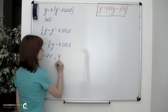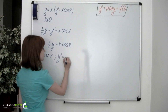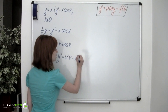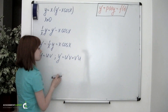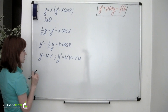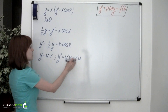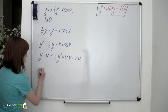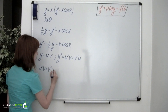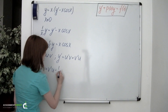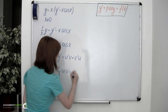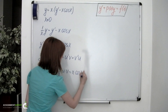We also remember that its derivative is found as u'v plus v'u — the derivative of a product of two functions. Now let's substitute these two expressions into our equation: u'v plus v'u minus 1 over x times u times v equals x times cosine of x.